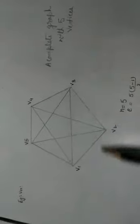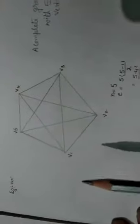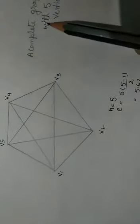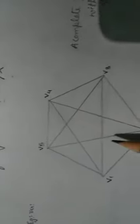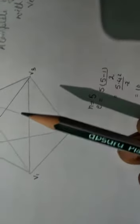In a complete graph, the number of edges is n(n−1)/2. Let us verify this with a complete graph of 5 vertices v1, v2, v3, v4, v5. Using the formula n(n−1)/2 with n = 5: the number of edges e = 5 × 4 / 2 = 10. So with this formula we can find the number of edges in a complete graph.